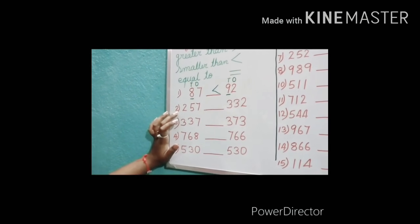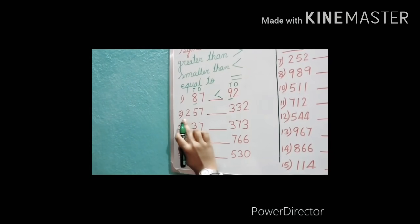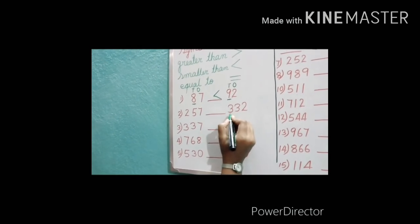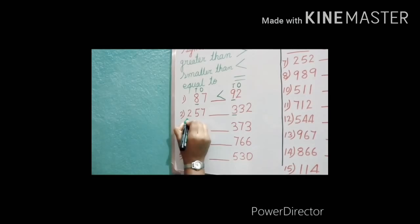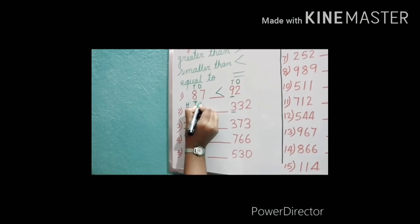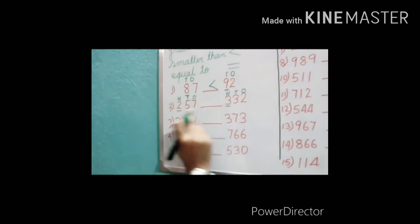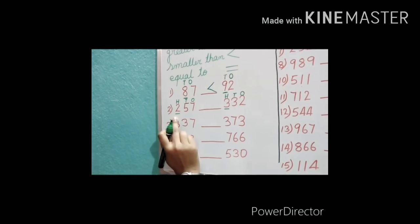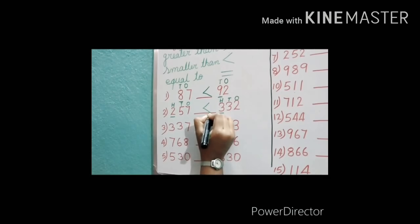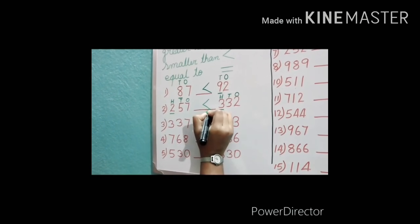Now in standard 2, we are going to read about 3-digit comparison. In question number 2, I have given you 3-digit numbers. First digit here is 3, and here the first digit is 2. We write the place value: hundreds, tens, ones. We are comparing the hundreds place digit — here is 3 and here is 2. Which is the greater one? 3. This side is the greater number — open — and this side is the smaller number — closed.